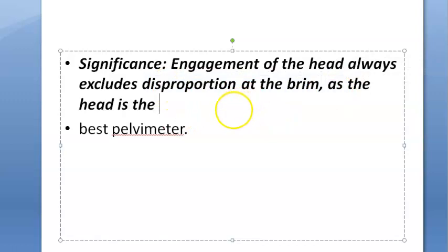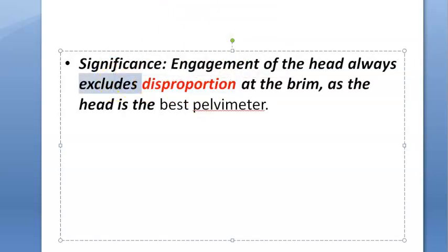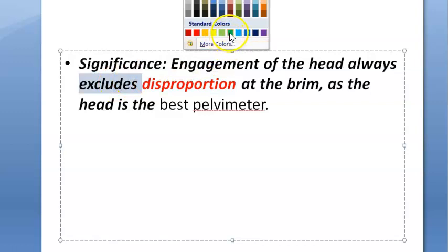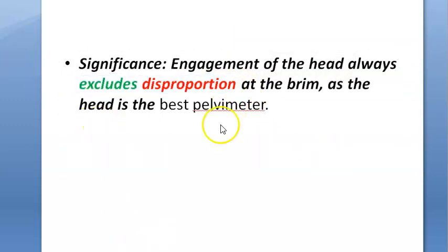Engagement of the head always excludes disproportion, because the head is the best pelvic meter. Disproportion is something we don't want — engagement excludes cephalopelvic disproportion (CPD). That means there is no CPD; the baby can sail through and come out. We know it can come out, apart from complications like shoulder dystocia.